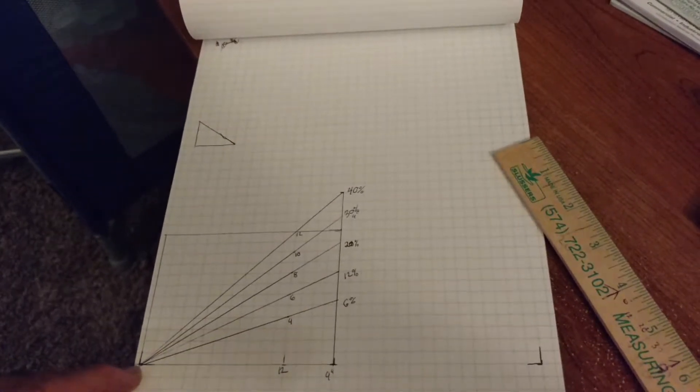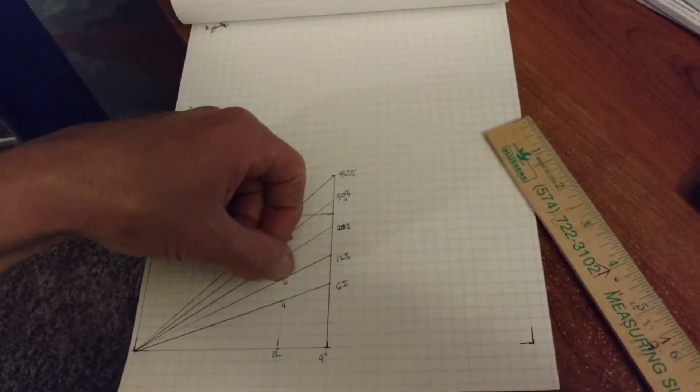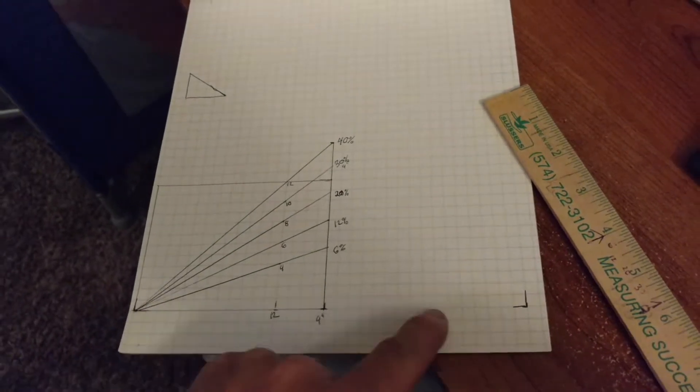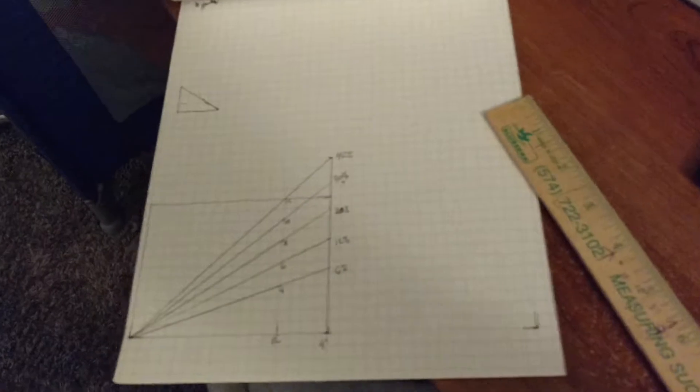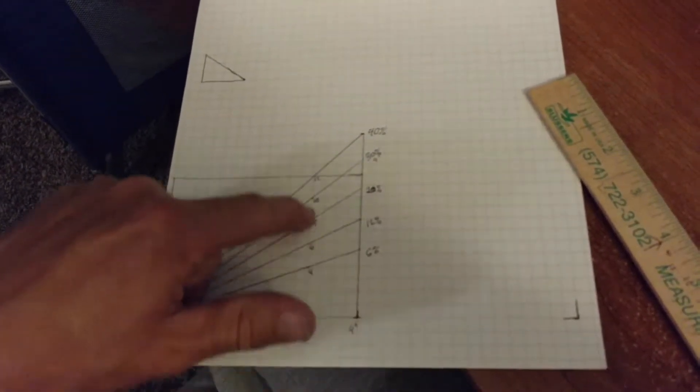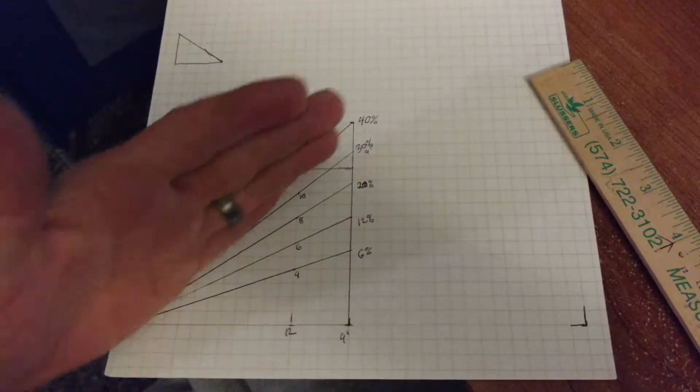A 6/12 is a 6 inch rise for every 12 inches. So if you go 24 inches in, two feet, you're gonna go up one foot. A 12/12 would be 12 inches in, 12 inches up - that's a 12/12, that's also a 45 degree angle.